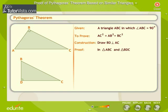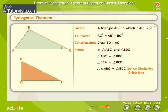In triangle ABC and triangle BDC, angle ABC is equal to angle BDC, since each angle is equal to 90 degrees. Angle BCA is equal to angle BCD, since it is the same angle. Therefore, triangle ABC is similar to triangle BDC by the AA criterion of similar triangles.